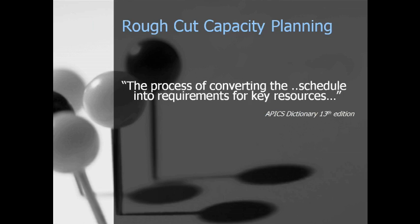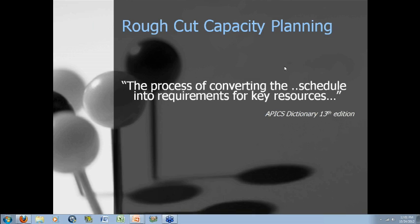So let's get to the classic definition of what rough-cut capacity planning is. According to the American Production and Inventory Control Society, commonly referred to as APICS, it is the process of converting the schedule into requirements for key resources. Now, in a job shop environment, what is a key resource today may not be a key resource tomorrow, depending on the jobs coming in and the work centers required to complete those jobs.